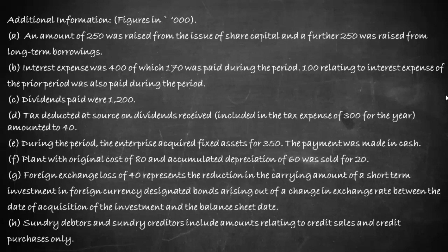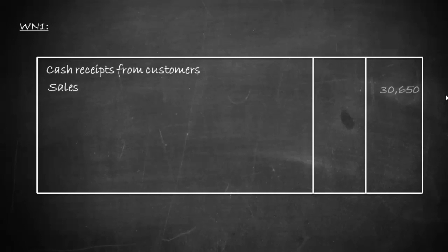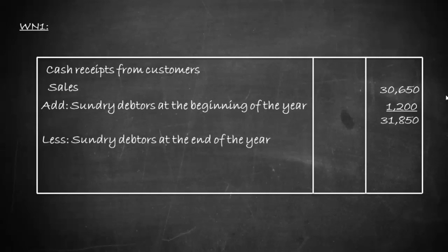For preparing the cash flow statement under the direct method, we need certain information. First, we need to know the cash received from customers. The formula is: opening debtors plus sales minus closing debtors. Cash receipts from customers: sales of 3,650, add opening sundry debtors of 1,200, less closing sundry debtors of 1,700, giving cash received from customers of 3,150.